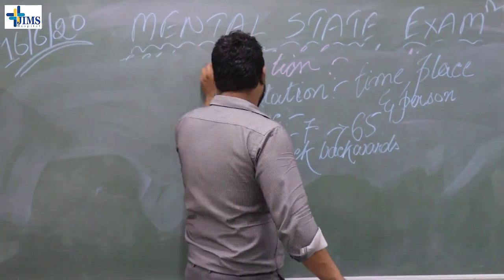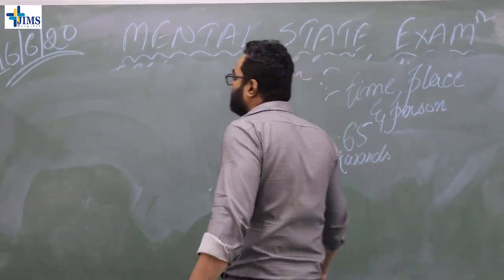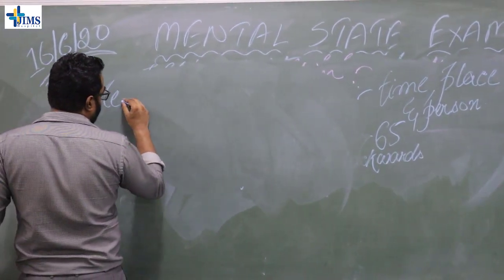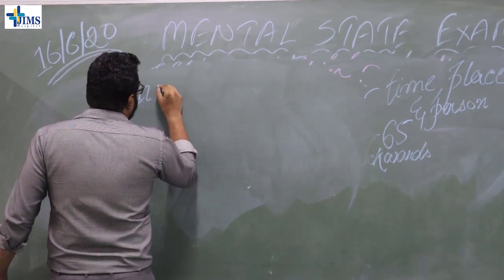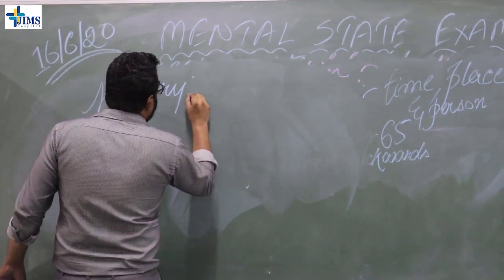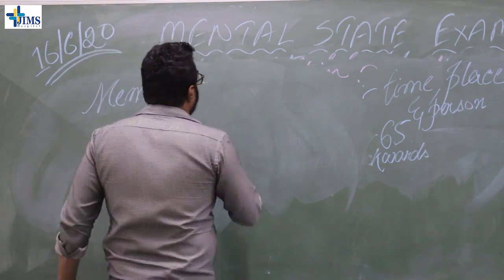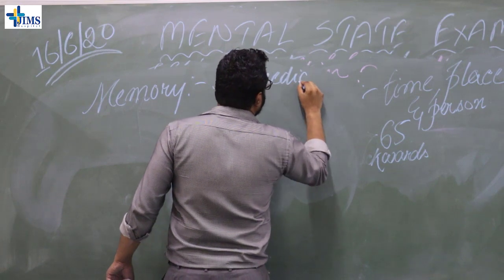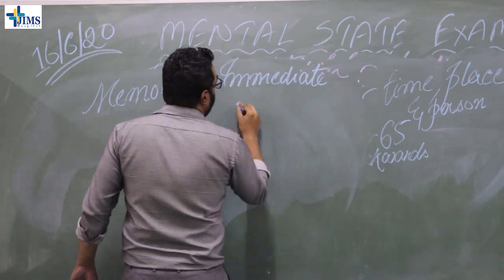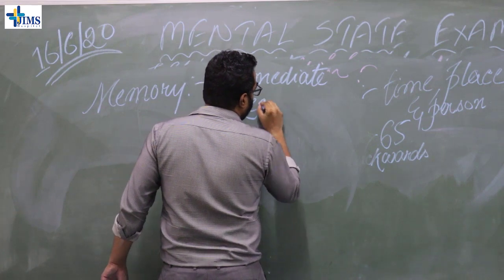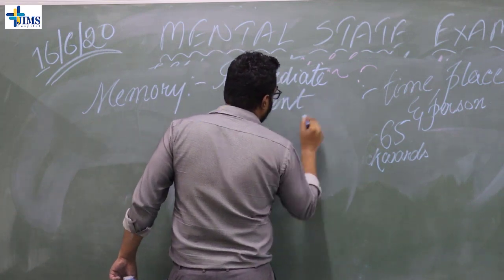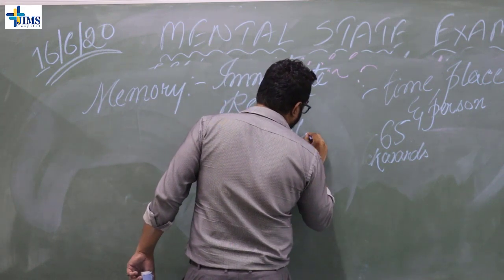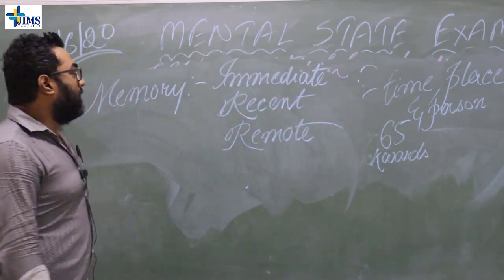Then comes memory. In the mental state examination, memory — all coming under sensorium and cognition — we divide into immediate, recent, and remote memory.